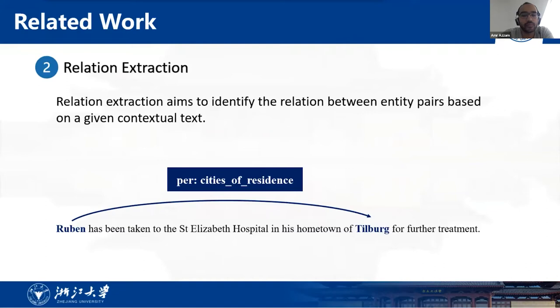Relation extraction aims to identify the relation between entity pairs based on a given contextual text. In order to reduce the cost of labeling, previous studies utilized distance supervision based on knowledge graphs to generate labeled examples automatically. More recent few-shot relation extraction approaches leverage prototype networks, multi-level matching and aggregation, relational twin networks and meta-learning.